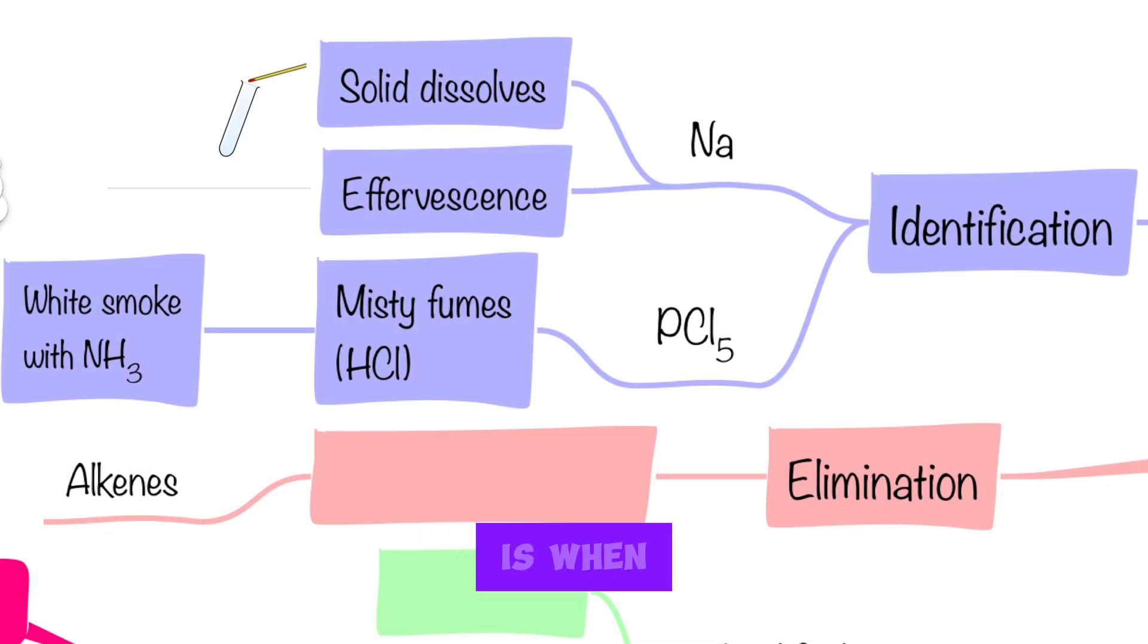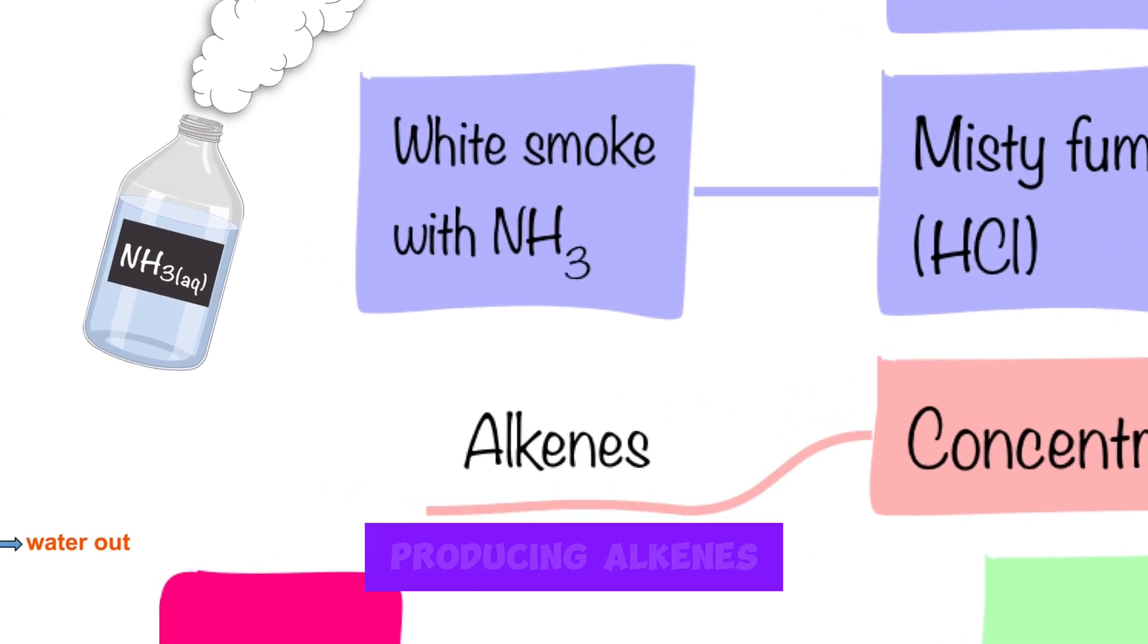Elimination of alcohols is when you react alcohols with concentrated sulfuric acid, and in this case you'll be producing alkenes.